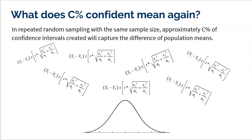First, and we've gone over this several times, it's super important to understand: what does C% confident mean? In a problem where you're finding a 95% confidence interval, what does 95% confident mean? Well, it's important that you understand this sentence: in repeated random sampling with the same sample size, approximately C% of confidence intervals created will capture the difference of population means.